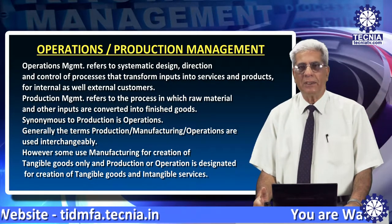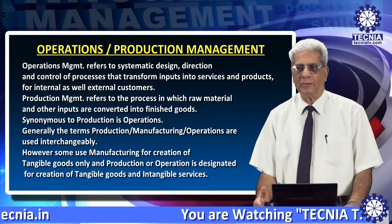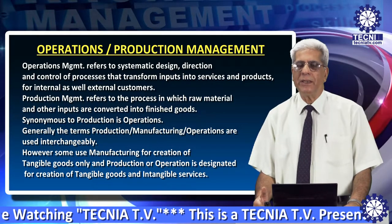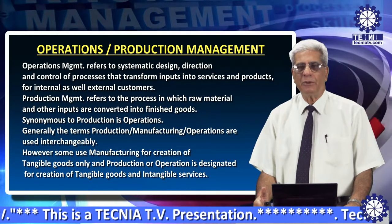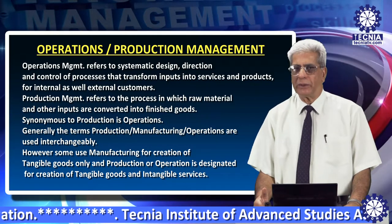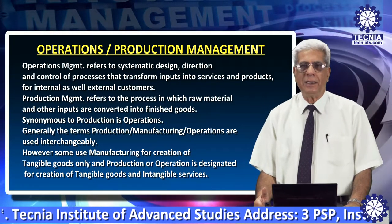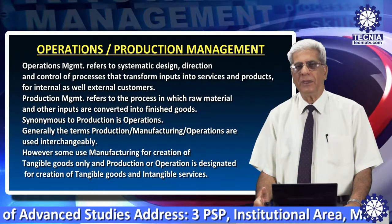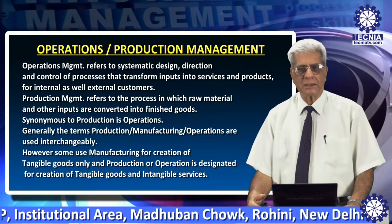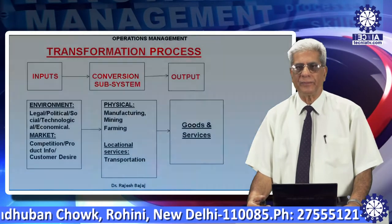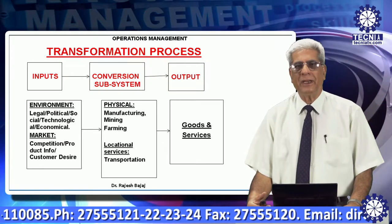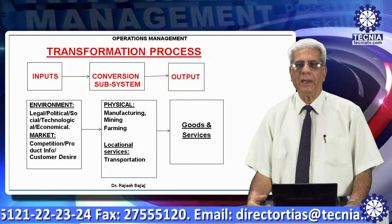There is a third term also which is manufacturing. Practically we tend to use manufacturing, operations, and production interchangeably. But academicians tend to use manufacturing management only for operations where tangible goods are produced, whereas for tangible as well as intangible services, we use operations management or production management. Now, what exactly is the transformation? We are using materials and facilities to transform them into physical products or intangible services.